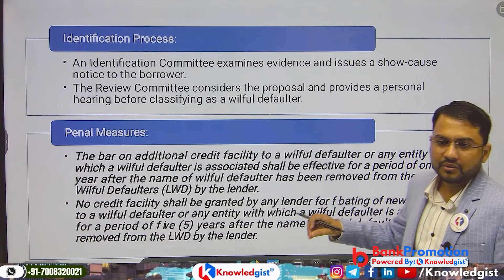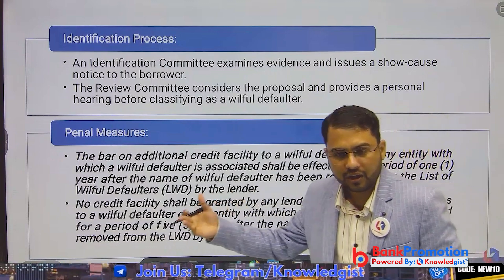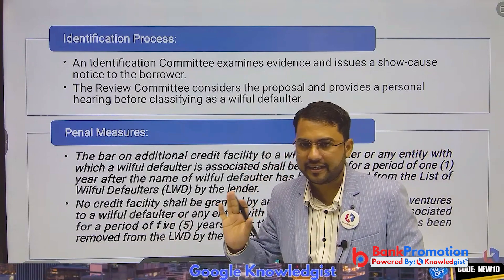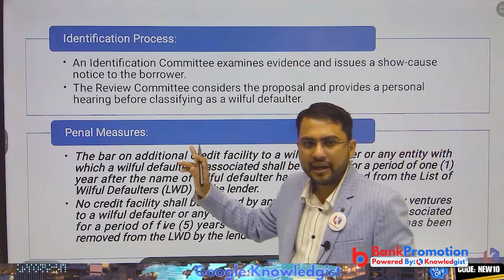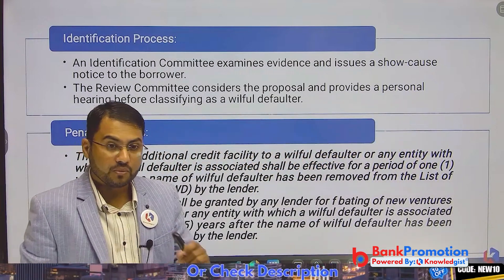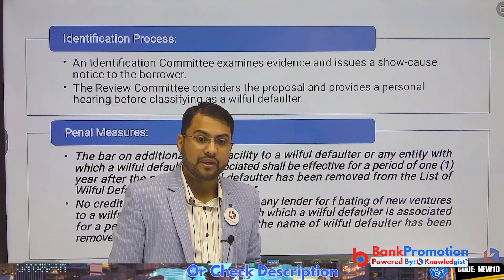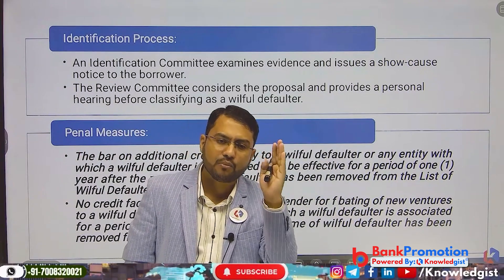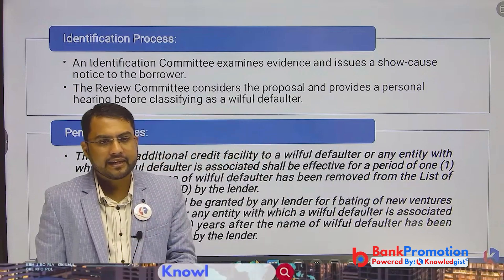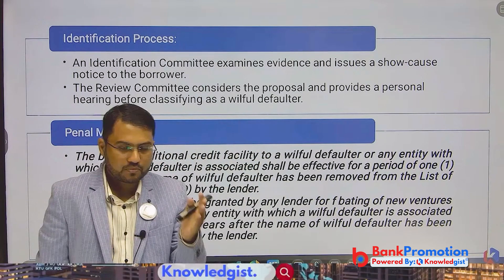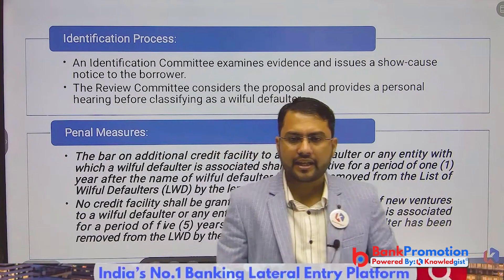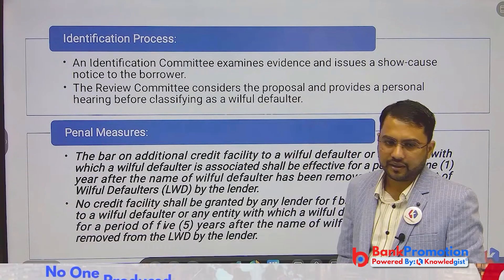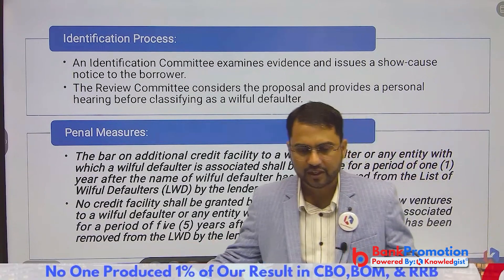So for a 25 lakh or above loan due — willful defaulter — or a 1 crore and above loan due — large defaulter — once you have decided to classify someone, first issue a show cause notice and ask them to come before the committee to give representation as to why they should not be called a willful defaulter. You are not paying, you are not responding, and we are going to categorize you as a willful defaulter — tell us why we should not categorize you as a willful defaulter.